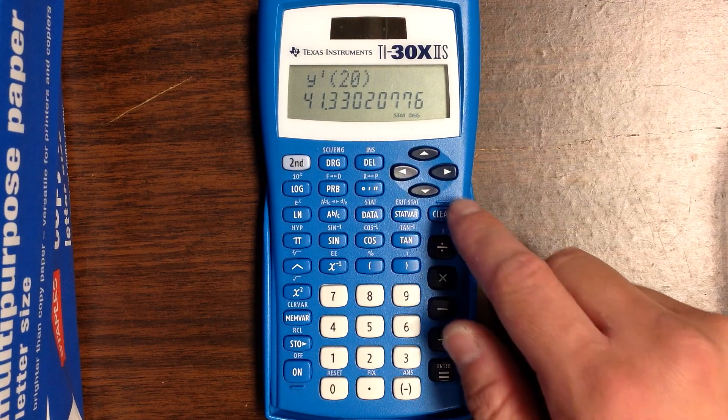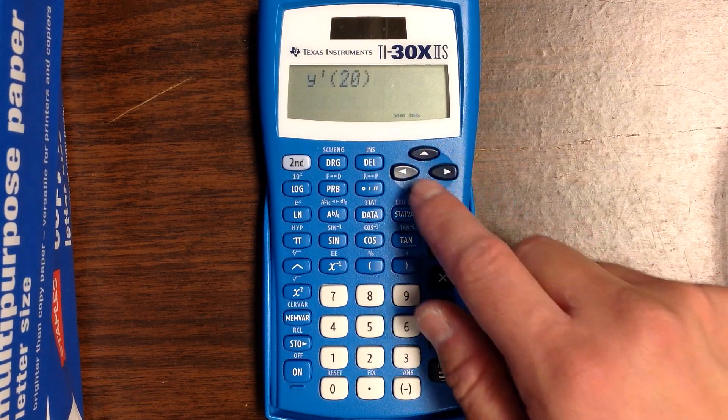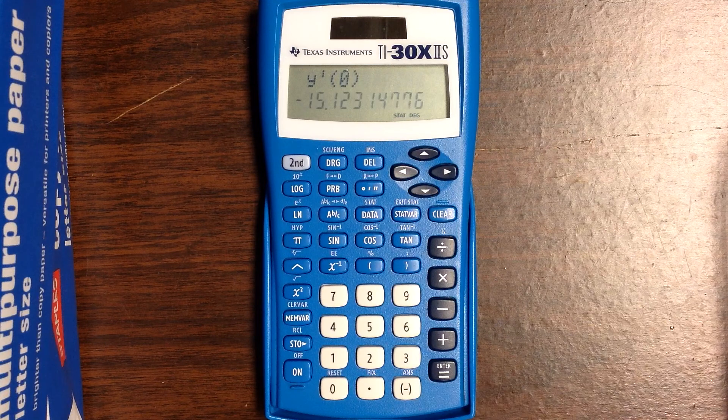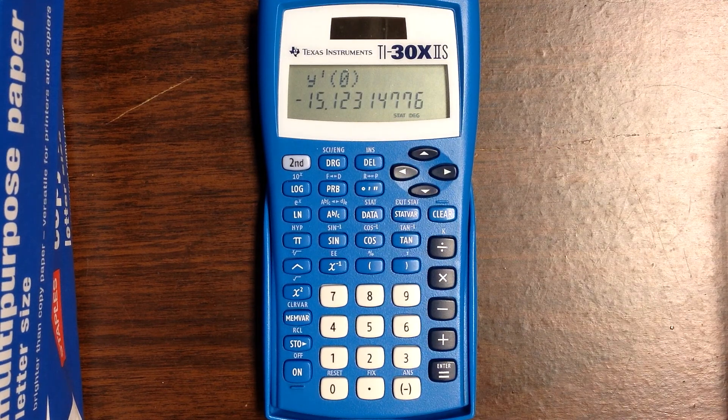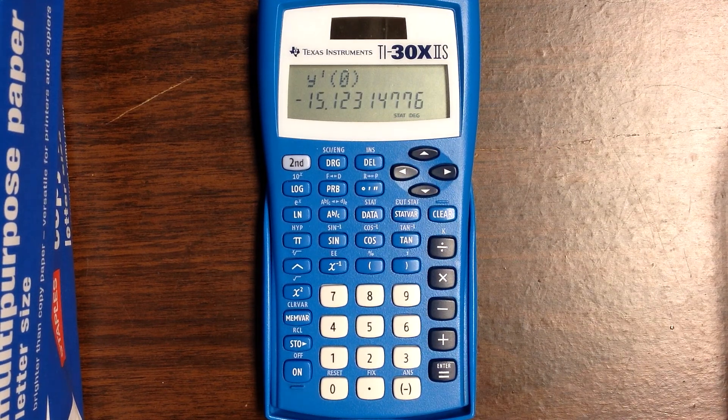Just to check to make sure it's right, let's scroll up. I'm going to enter zero for X, which should give me the value for the intercept. That's how you do some very basic linear regression on your TI-30.